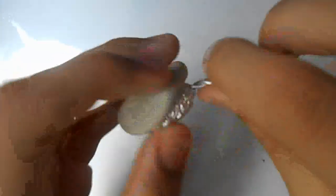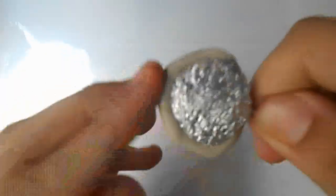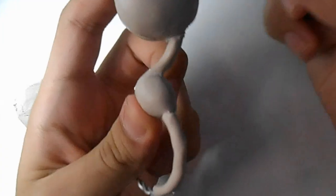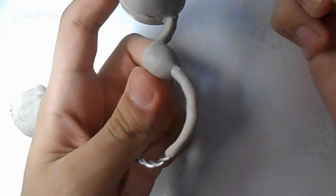Then we will start sculpting. We will sculpt her head first. Similarly, make her neck, chest, and waist from clay. Then we will sculpt her hair.